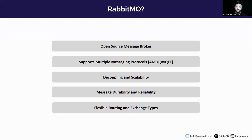RabbitMQ has two types of queues: one is a classic queue and the other is a quorum queue. Both come with their own benefits and cons. Message durability and reliability are among the most important features RabbitMQ offers. You can publish durable or transient messages and consume them in acknowledged or unacknowledged mode. Flexible routing and multiple types of exchanges are RabbitMQ's specialty.